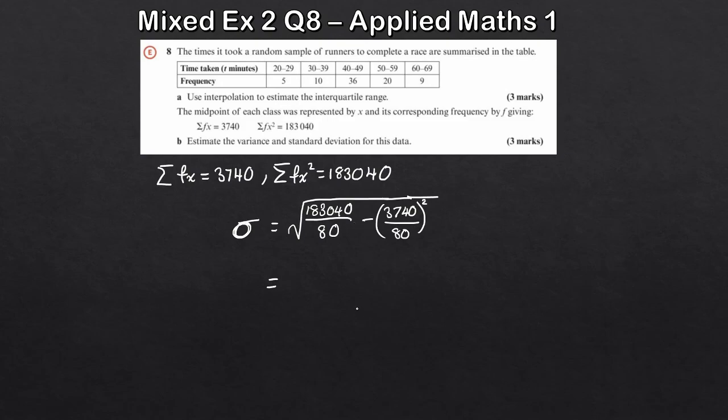So if you work this out in your calculator, what you should get here is 10.1, rounding that sensibly. So 10.1. So that's the standard deviation. So if you want the variance, all you do is you square the standard deviation. So the variance, that's equal to sigma squared. So that's going to be 10.1 squared, which is going to give us approximately we get 102, depending on how you round it. And there we have it.